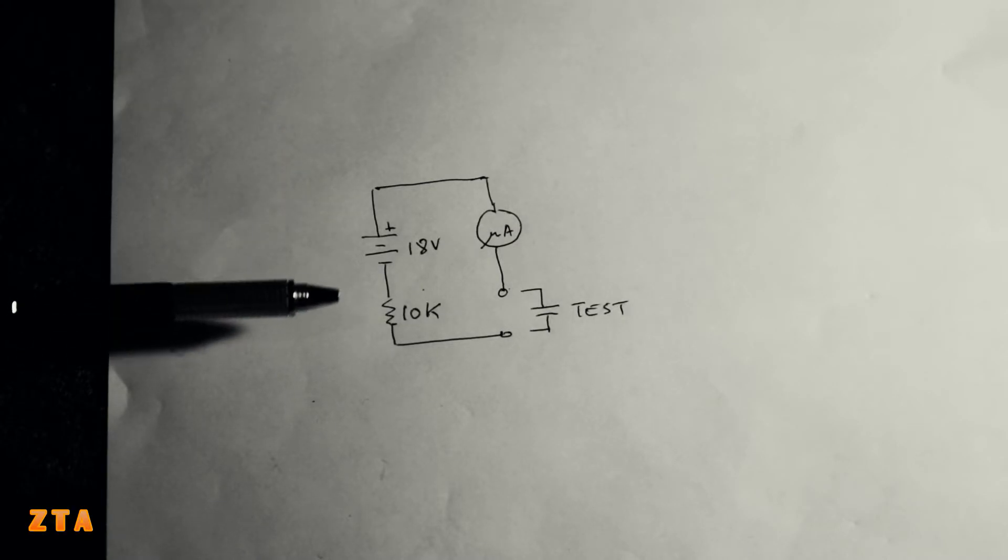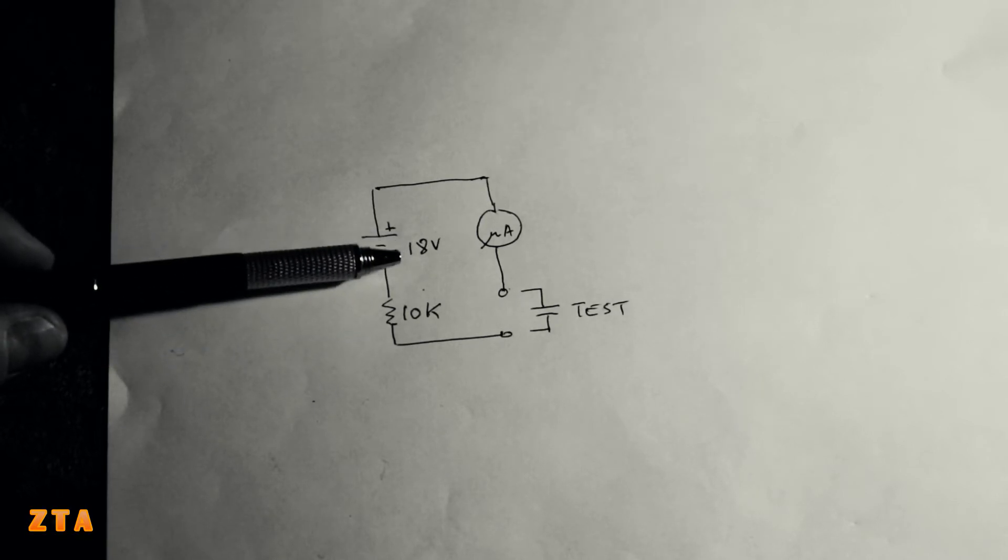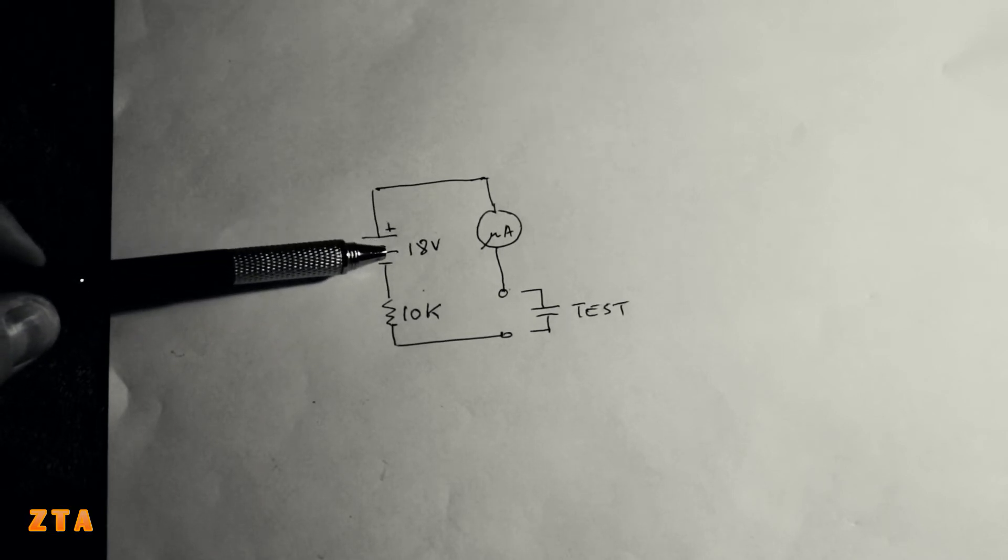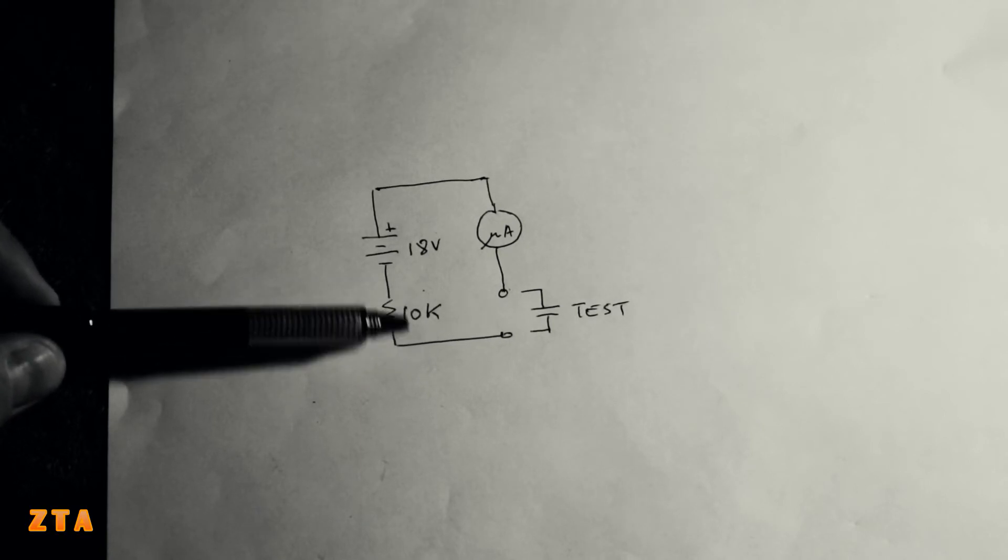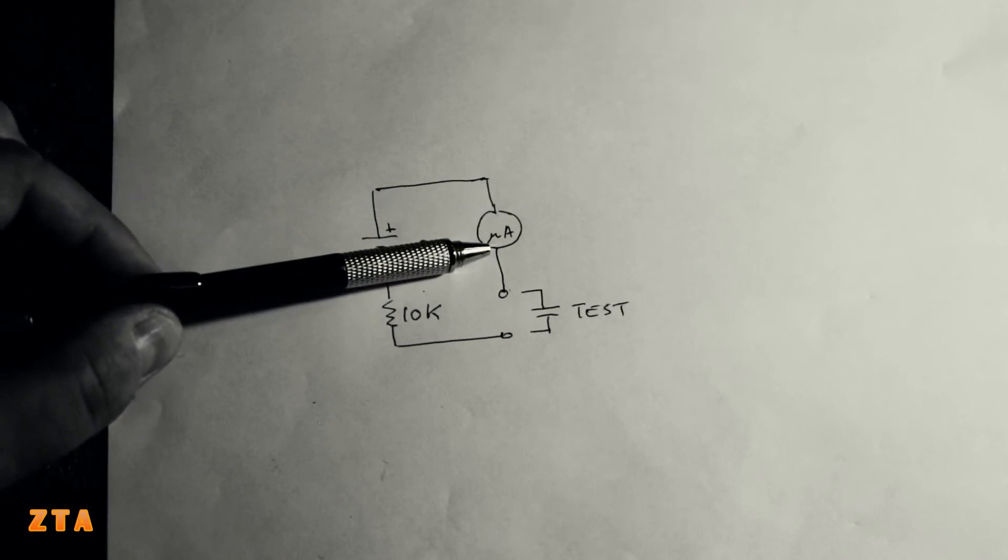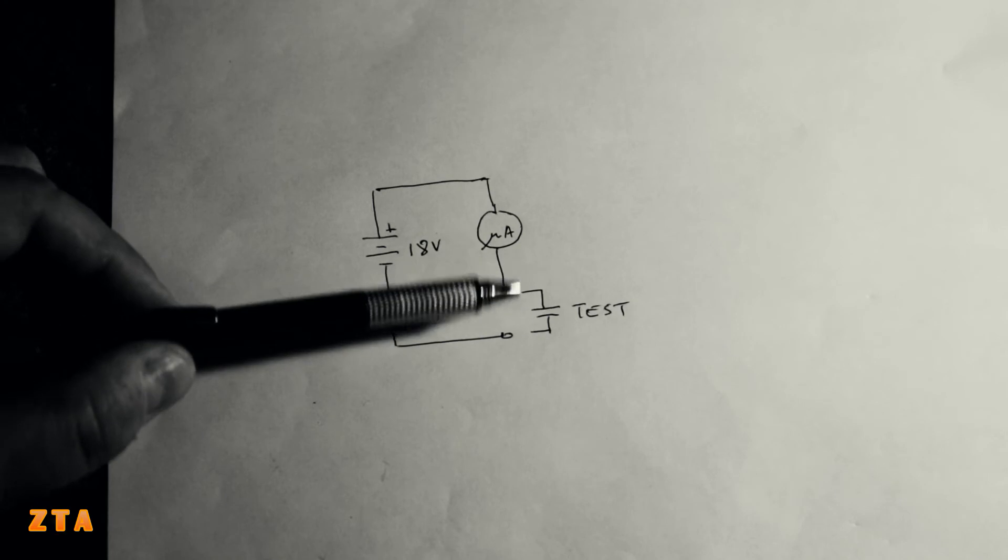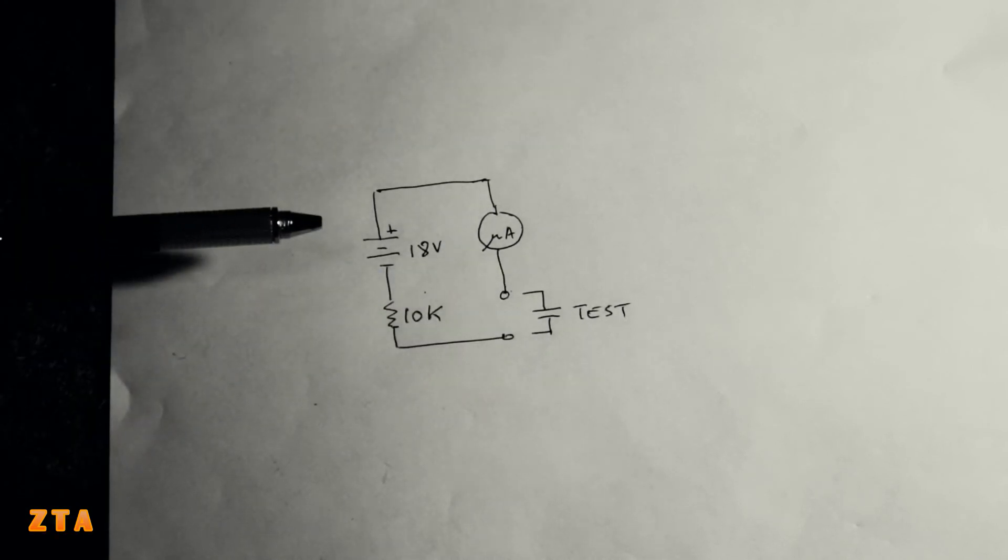Here's the $5 capacitor tester circuit. As you imagine, it's very simple. We have an 18 volt voltage source here, my two 9 volt batteries. We have a 10 kilohm resistor. I'll explain what that's for. Then I have the multimeter set to microamps connected here in series. These are two leads that connect to the capacitor under test.